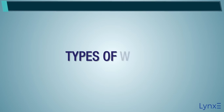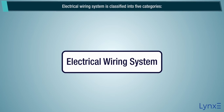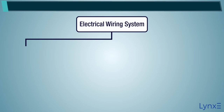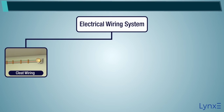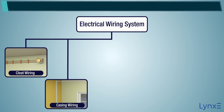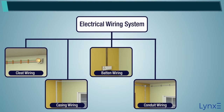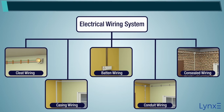Types of Wiring: The electrical wiring system is classified into five categories — Cleat wiring, Casing wiring, Batten wiring, Conduit wiring, and Concealed wiring.